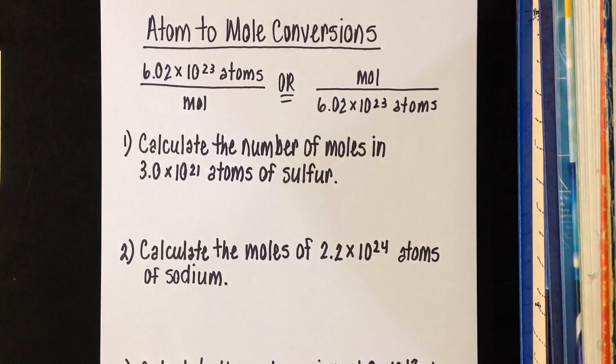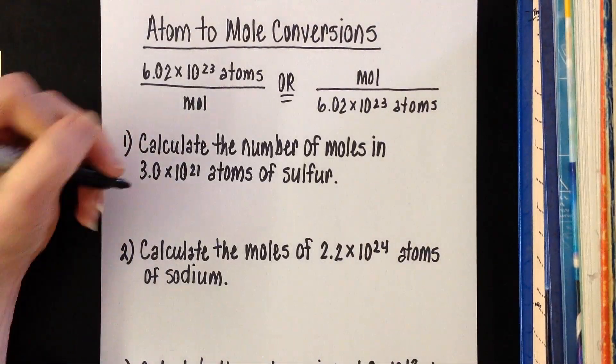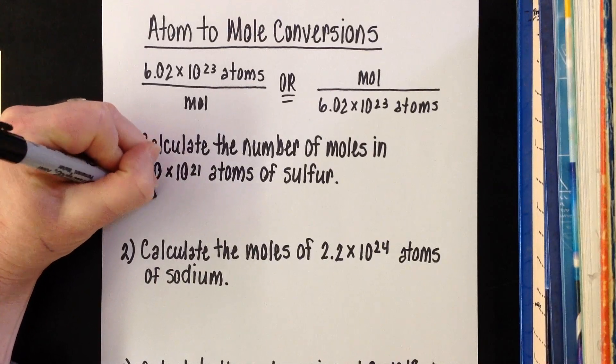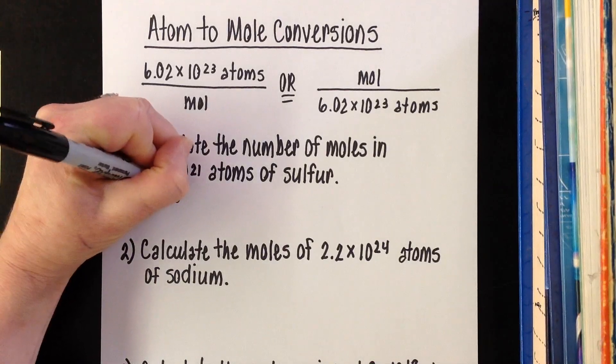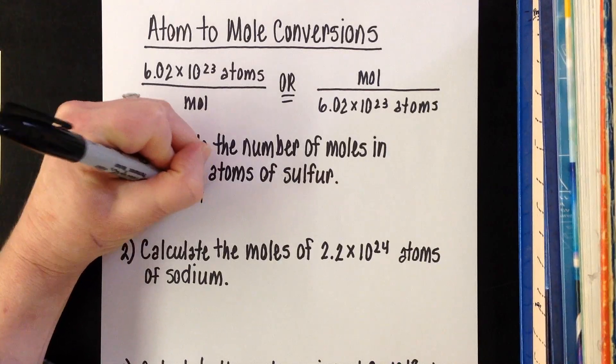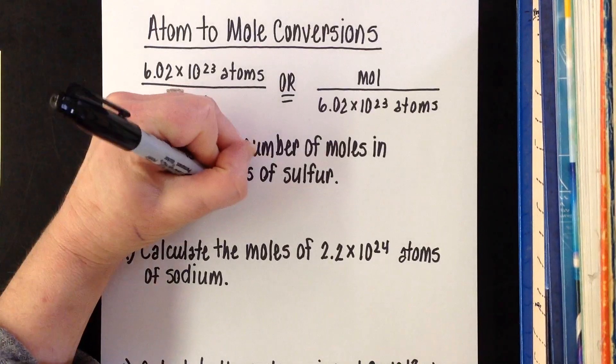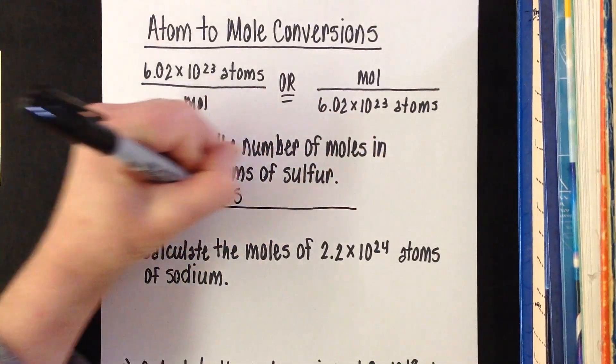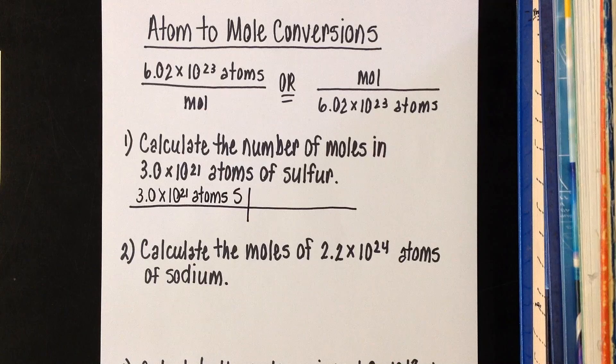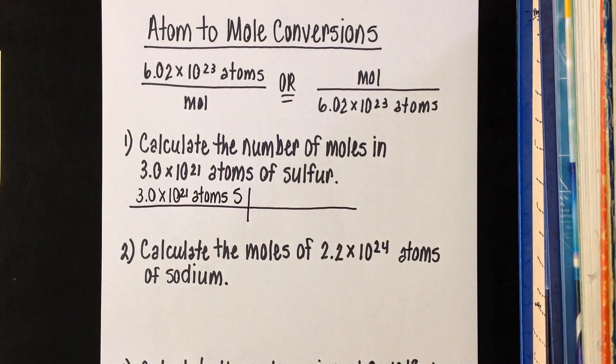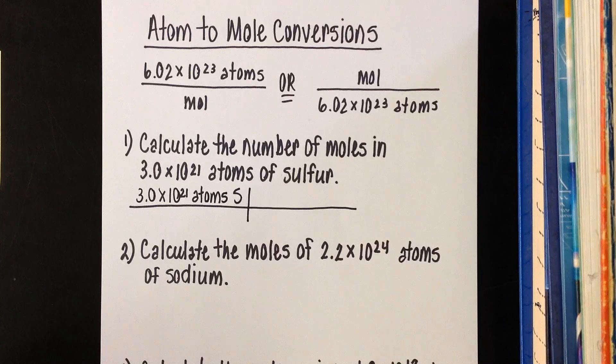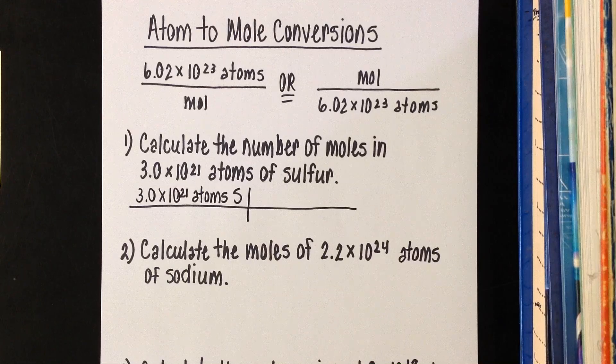So the concept is just a little bit different here. This time, we're starting with atoms. Looking at number one, we have 3.0 times 10 to the 21 atoms of sulfur. Writing down that given, long line, short line. I've got quite a few atoms of sulfur here and I want to know how many moles is that? This is like me saying you've got 48 cookies, how many dozen is that? We know we would divide by 12.